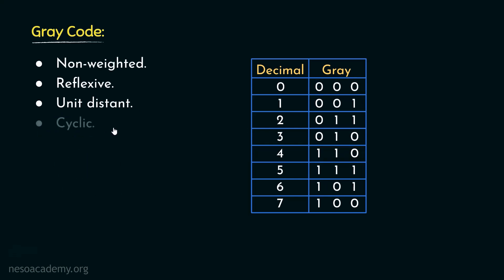Gray codes are also cyclic in nature. Observing the first pattern in the sequence, 0 0 0, and the last pattern, 1 0 0 — to convert the last pattern to the first, all we have to do is toggle the MSB. This is possible due to mirror imaging, and this is why gray codes are called cyclic.